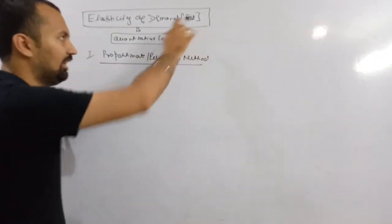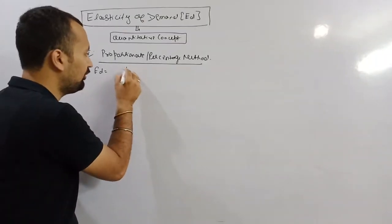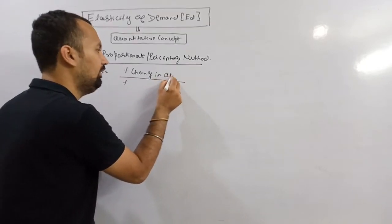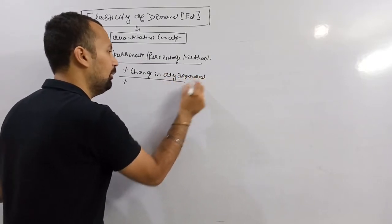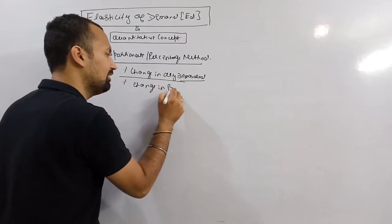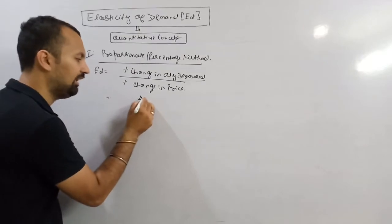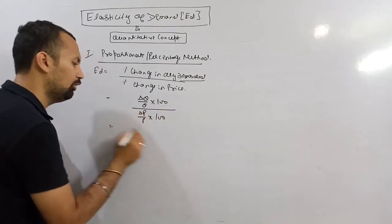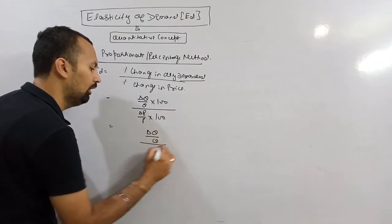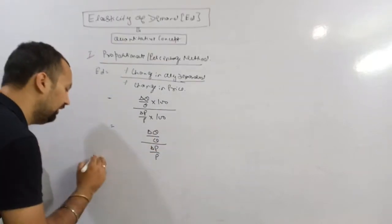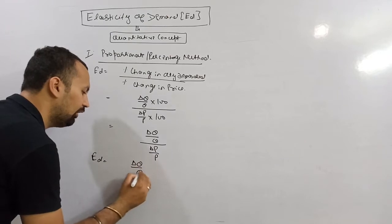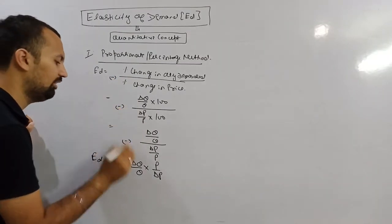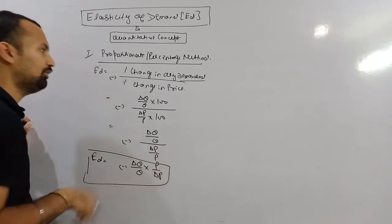Elasticity of demand can be denoted as Ed. The proportionate method shows the proportion — percentage change in quantity divided by percentage change in price. Percentage change in quantity is delta Q upon Q into 100, whereas percentage change in price is delta P upon P into 100. Simplifying, this gives delta Q upon Q divided by delta P upon P, which equals delta Q upon Q into P upon delta P. A negative sign is added to show the inverse relationship between price and quantity demanded.